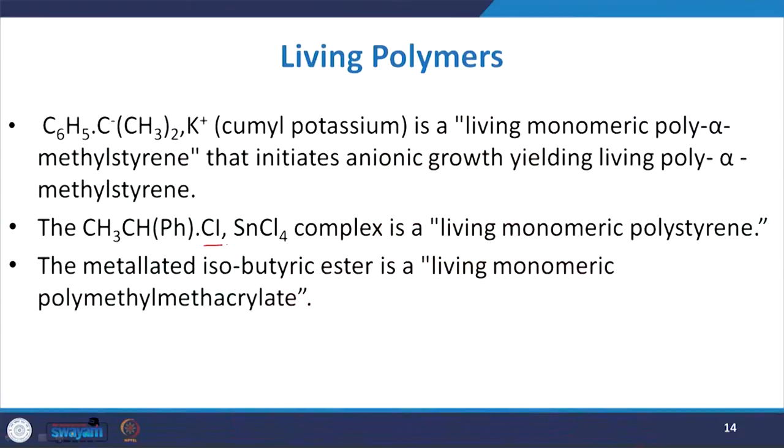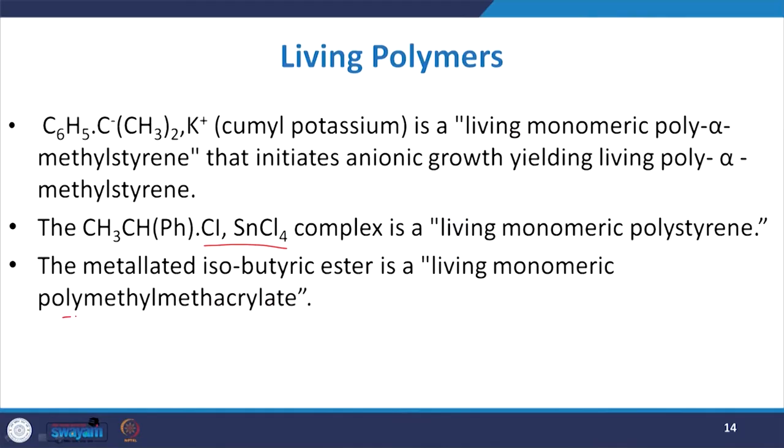We shall refer to polymers as living if their end groups maintain the potential for growth for at least as long as it is required for completion of the intended synthesis. Polymers of uniform size are produced when propagation is initiated by synthetically prepared living monomeric polymers. For example, cumoyl potassium is termed as a living monomeric poly alpha-methyl styrene that initiates the anionic growth yielding living polymer of alpha-methyl styrene. The metalated isobutyric ester is the living monomeric poly methyl methacrylate. These are a couple of examples of living polymers.